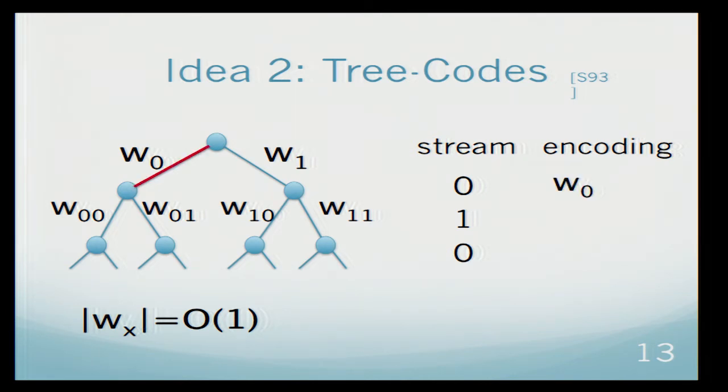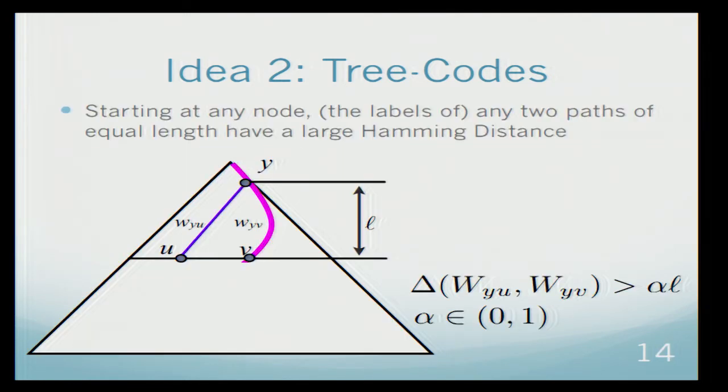If we have some string to encode, we just begin at the root. If the first bit is zero, we go to the zero child of the root, and encode zero as the label w_0. And then we will take the one child, because the bit is one, and encode it as this label. All of the labels of this tree are not just arbitrary labels. They have some nice property.